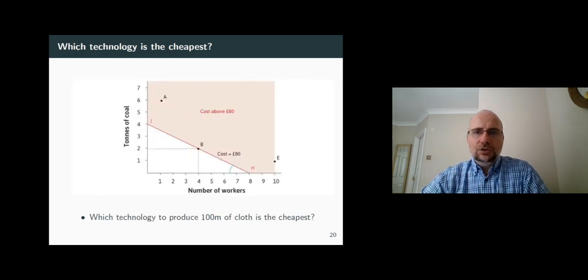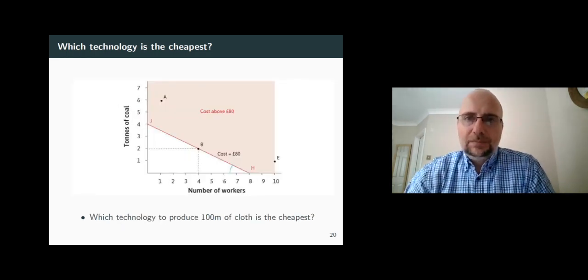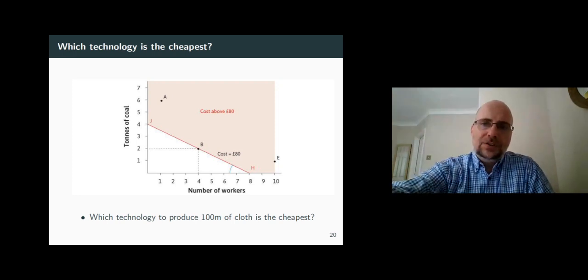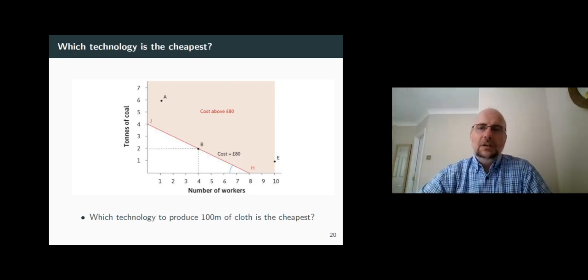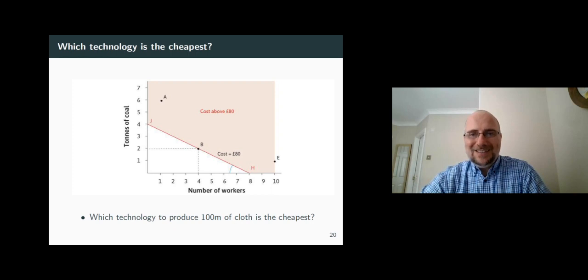So, how to choose the best technology? All technologies, A, B, E, lead to the same amount of output, but not all of them are equally cheap. You choose the one technology which can achieve your target output with the minimal cost. In this case, it is technology B.